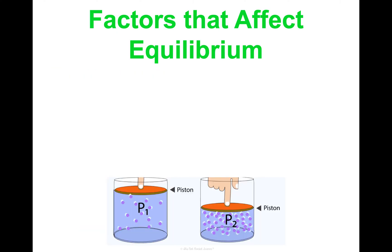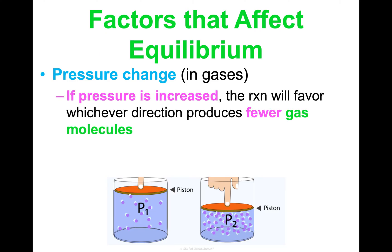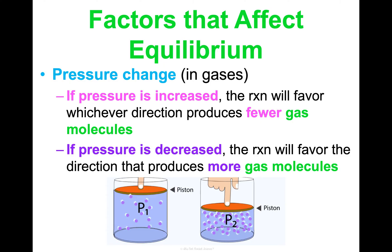The last factor is pressure, and this is a bit trickier because it only affects gases — pressure changes in solids and liquids are so minimal they don't make a difference. If pressure increases, the reaction will favor whichever direction makes fewer gas molecules to decrease that pressure. If pressure decreases, the reaction favors the direction that makes more gas molecules to compensate. Pressure is inversely related to volume: if I decrease the volume, I'm increasing the pressure; if I increase the volume, I'm decreasing the pressure. Sometimes you'll see problems refer to pressure, sometimes to volume — they work together.